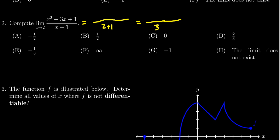So we'll plug in two into the numerator as well, so we get two squared minus three times two plus one. Two squared is four, three times two is negative six, plus one.